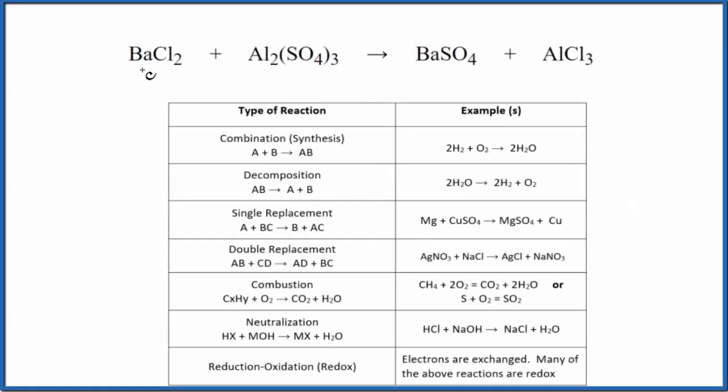In this video, we'll look at the type of reaction for BaCl2 plus Al2(SO4)3. This is barium chloride and this is aluminum sulfate.